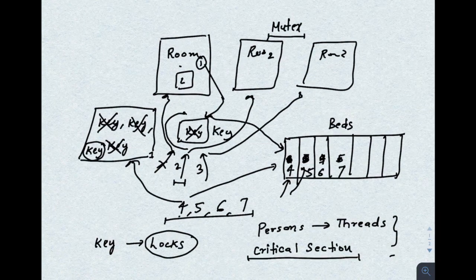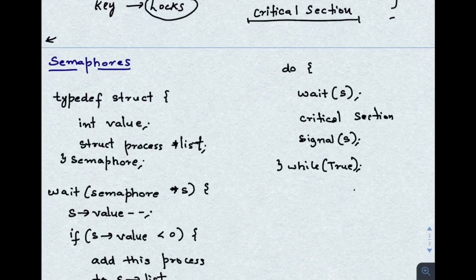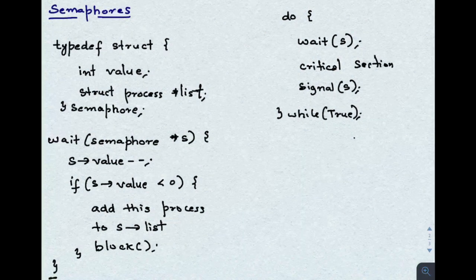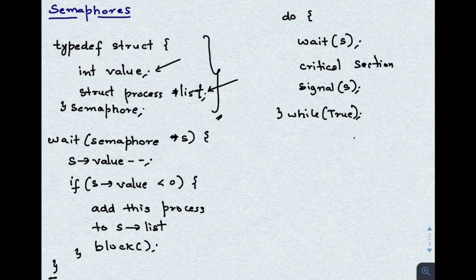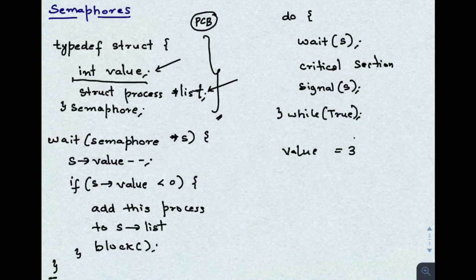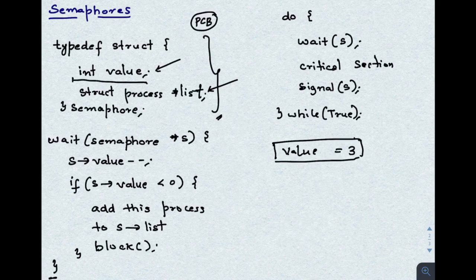Now let's look at the actual implementation of semaphore — mutex is also a semaphore, so we'll cover semaphore first. A semaphore consists of a value and a process list. This process list is a list of process control blocks — I'll explain why this list is needed. The value is an integer; unlike a simple lock with true/false, here the value can be any positive number. If the value is three, it means three threads at maximum can be in the critical section at the same time.